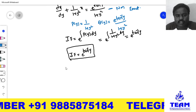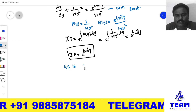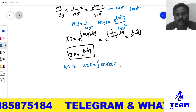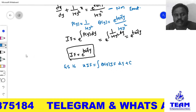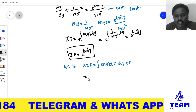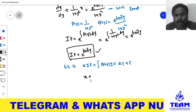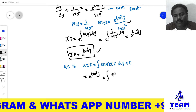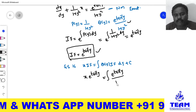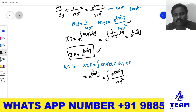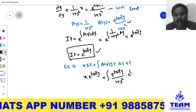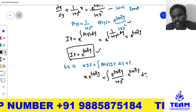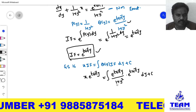Now we find the general solution. The general solution formula is x · (integrating factor) = ∫ Q(y) · (integrating factor) dy + c, where c is an arbitrary constant. Substituting, we have x · e^(tan⁻¹y) = ∫ [e^(tan⁻¹y)/(1 + y²)] · e^(tan⁻¹y) dy + c. We now need to simplify this integrand.